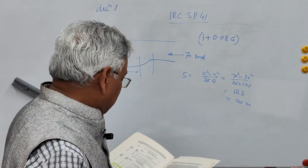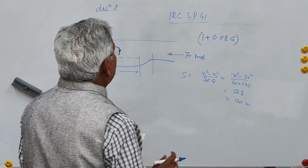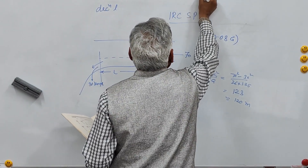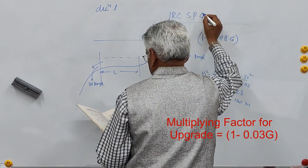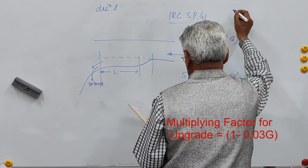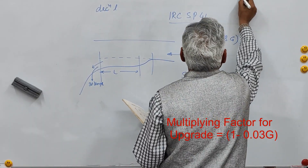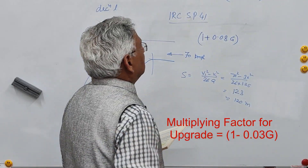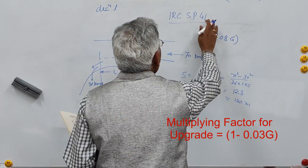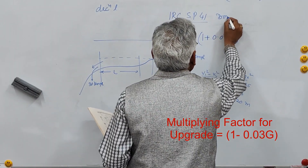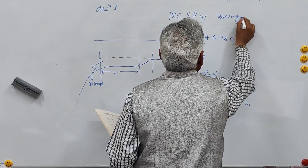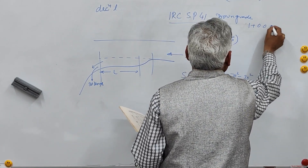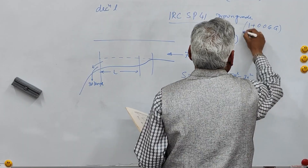IRC SP 41 further states that if the deceleration lane is on an upgrade, the length should be reduced by a factor of (1 - 0.3G), where G is the gradient. And if it is on a downgrade, the length should be increased by a factor of (0.0G + 1) — that is, it should be increased proportionally to account for the grade effect.